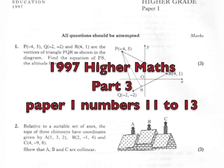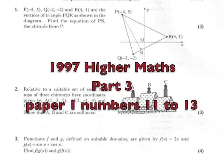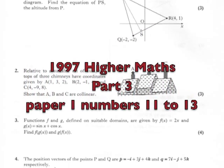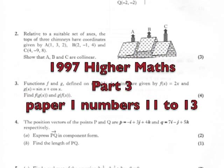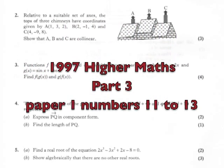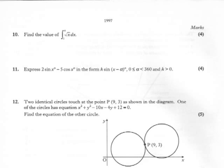Part three then of going over the 1997 higher paper for practice on three questions covered this time, numbers 11 to 13. I do go on a bit, going over each of them with extra points here and there, and alternative methods for solving them.